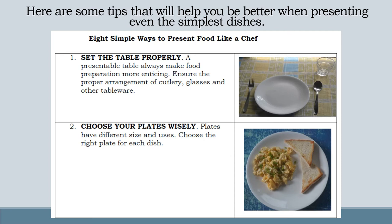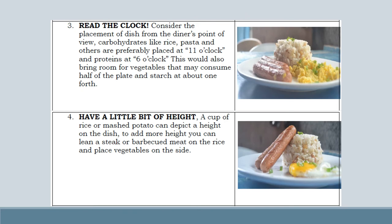Number 2: Choose your plates wisely. Plates have different sizes and uses. Choose the right plate for each dish. Number 3: Read the clock. Consider placement of dish from the diner's point of view. Carbohydrates like rice, pasta, and others are preferably placed at 11 o'clock and proteins at 6 o'clock.